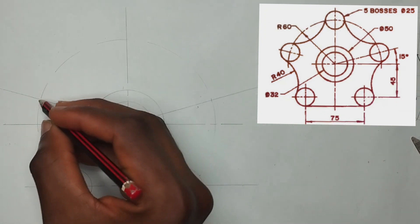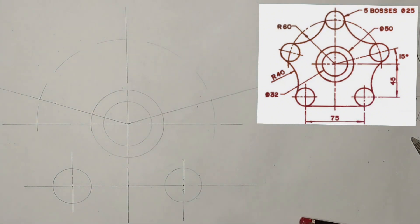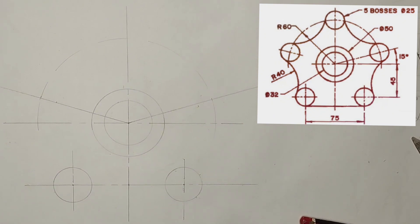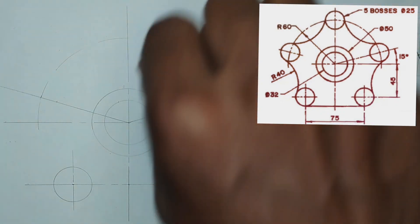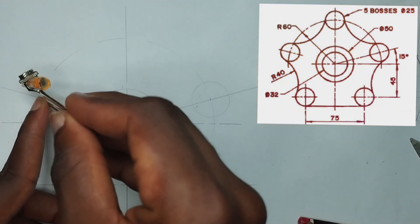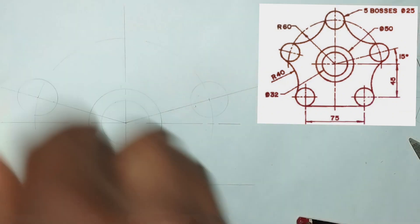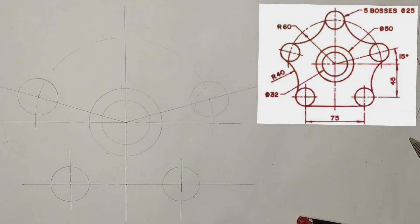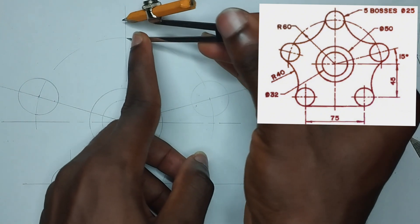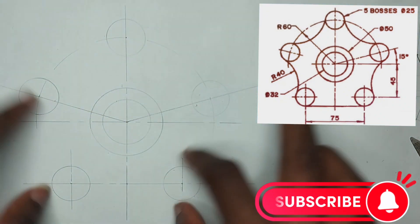Where the arc of 60 millimeters we have drawn and the 15-degree line are meeting each other, I'm going to pick a radius of 12.5 millimeters on my compass, place it at that intersection point, and draw my circle. Then place it at the other intersection point and draw the circle there as well. Both circles are 25 millimeters in diameter. So we are done drawing all five circles.